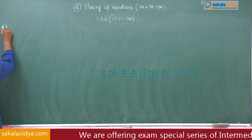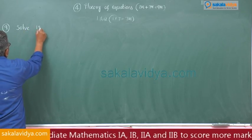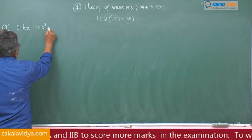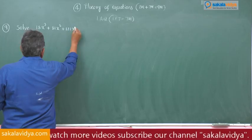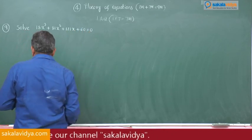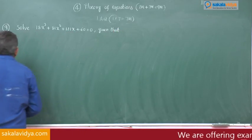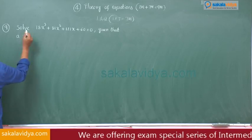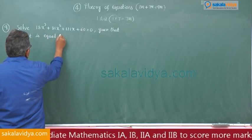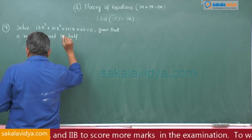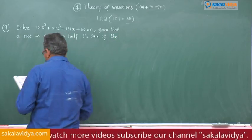9th problem: Solve 18x³ + 81x² + 121x + 60 = 0, given that a root is equal to half of the sum of the remaining roots.